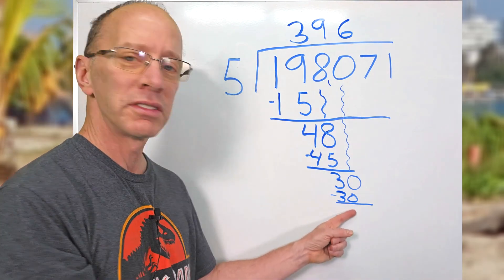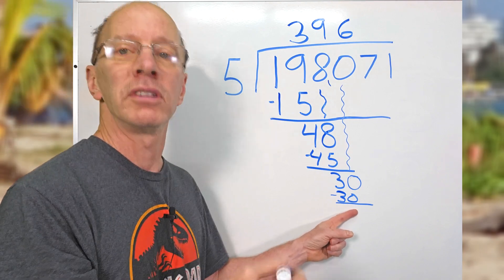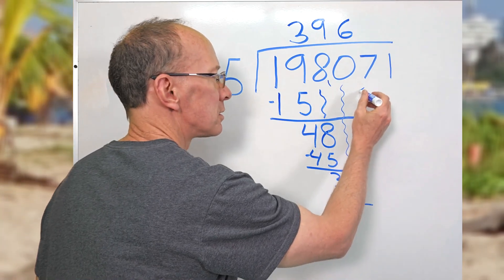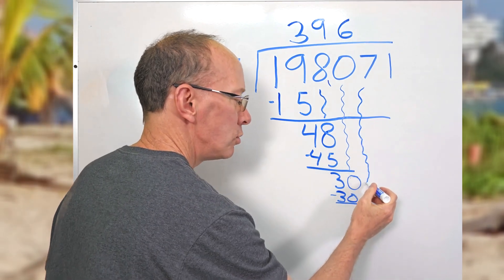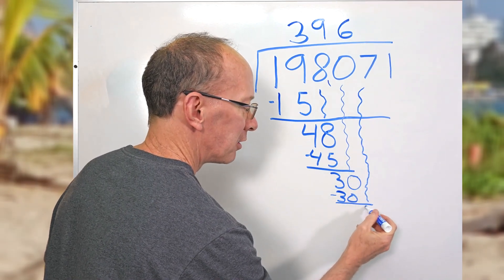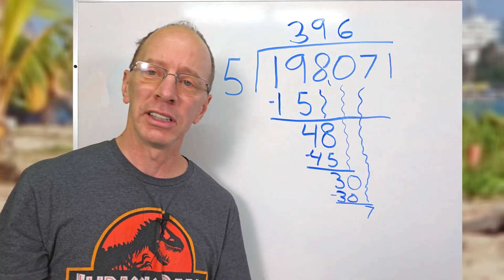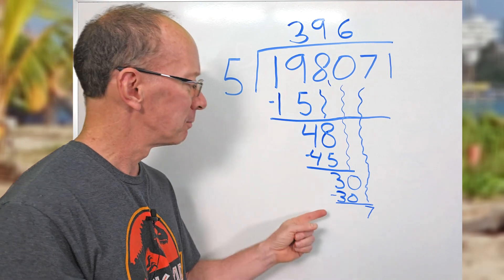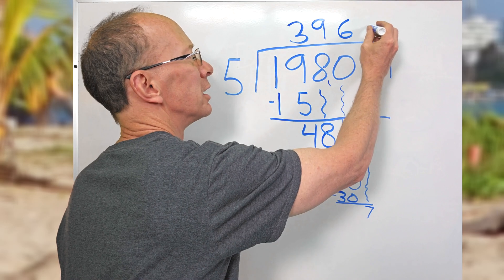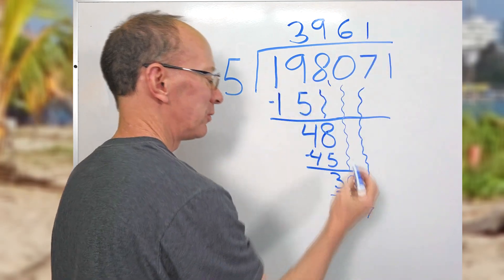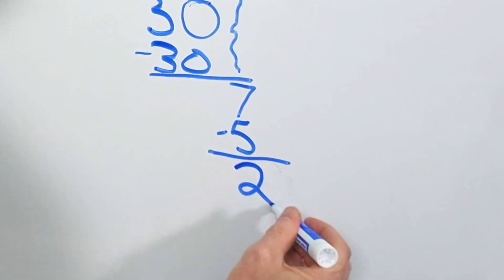Now I drop the next number down. Drop it down. How many times can I put five into seven? I think one time — we can only put it one time. So one times five is five right here. Seven minus five equals two.